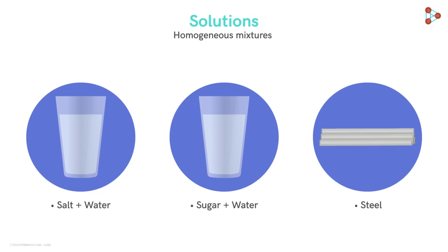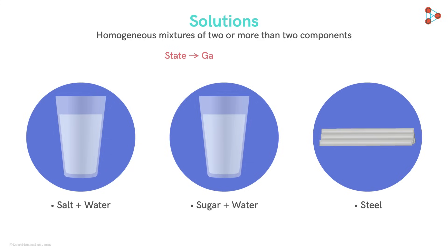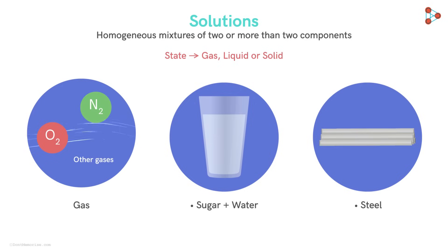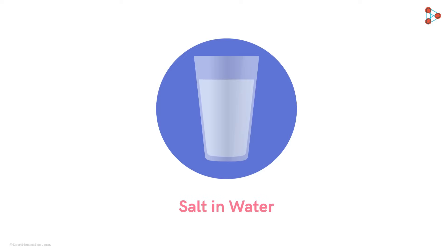These types of homogeneous mixtures are called solutions. A solution is a homogeneous mixture of two or more components. So the mixture of salt and water, the mixture of sugar and water, and steel are all solutions. Solutions need not always be in a liquid state — they can be in any of the three states of matter: gas, liquid, or solid. For example, air is a gaseous solution of oxygen, nitrogen, and other gases, and carbon dioxide dissolved in soft drinks is a gas dissolved in a liquid.